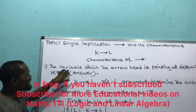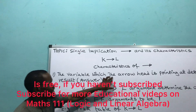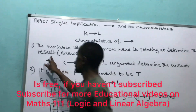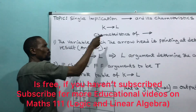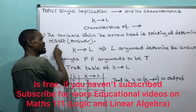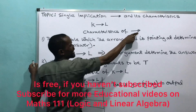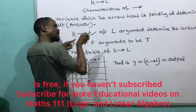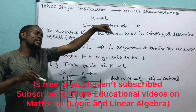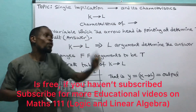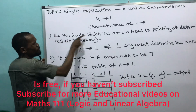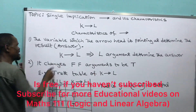Characteristic one: the variable which the arrowhead is pointing at determines the result — that means the answer. The variable which the arrowhead is pointing at determines the result or the answer. Look at the arrowhead — the variable which the arrowhead is pointing at determines the result. He is the one that will tell us the answer. Whatever that variable is remains our answer.